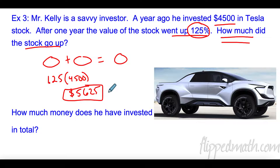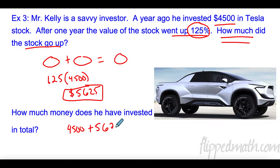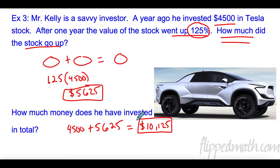That's awesome — that's just one year. That's probably not realistic in most situations, but sometimes things happen. Now the question is asking how much does he total have invested now? That's where we have our original 4,500 and we add our increased amount of 5,625, and we get his total of ten thousand one hundred and twenty-five dollars. Sometimes I'm going to ask you just what is the total investment or what's the total price, and other times how much did it go up or how much did it go down.